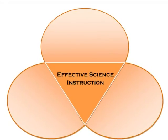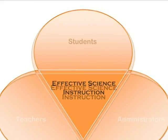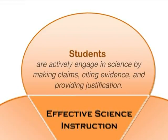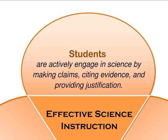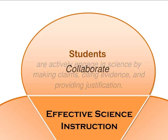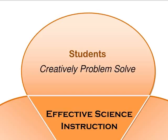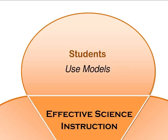Our vision focuses on three aspects of science education. The first factor in our vision is the role of students. In effective science instruction, students are actively engaged in science by making claims, citing evidence, and providing justification. In an effective science classroom, students will collaborate to develop understanding, discuss and debate science concepts, think creatively to solve problems, and make, use, and interpret models.